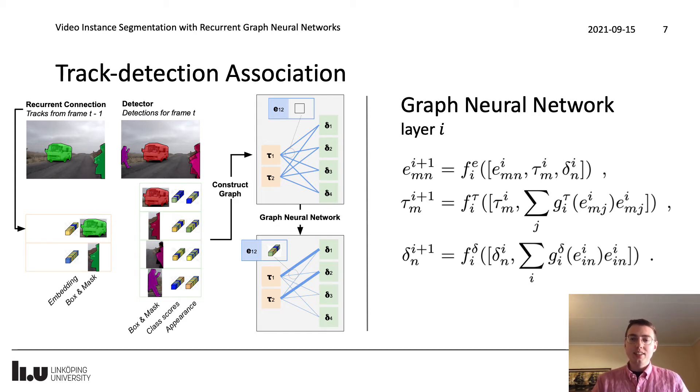Last, each detection embedding is updated in the same fashion as with the tracks but the functions f_delta and g_delta use a different set of weights. Note that all of these functions are equivariant. If we permute the tracks for instance, the output of the GNN would be the same but permuted in the same way. After applying this GNN we have processed the information available, then we predict whether each track and each detection matches. We take the corresponding edge embedding and feed that through a logistic model.